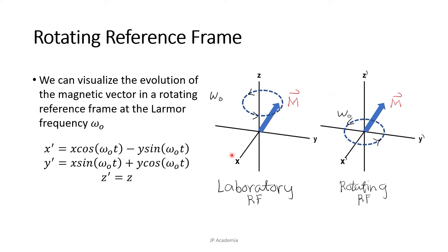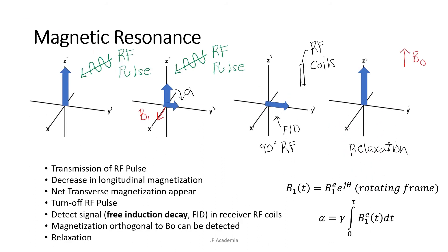Note that in a laboratory reference frame, the magnetic moment is the one rotating, while in the rotating reference frame, the transverse magnetization or the X prime and Y prime is stationary, but the coordinate system is rotating at the Larmor frequency.